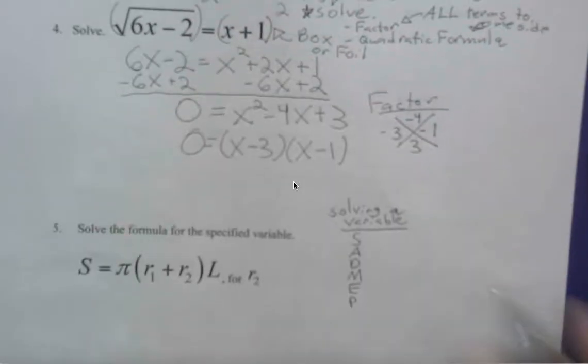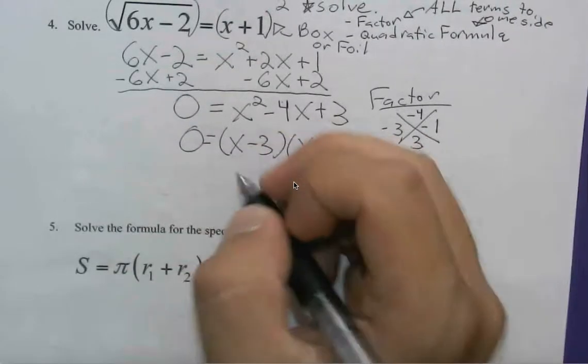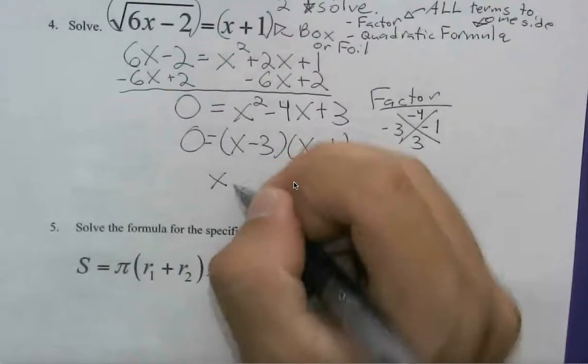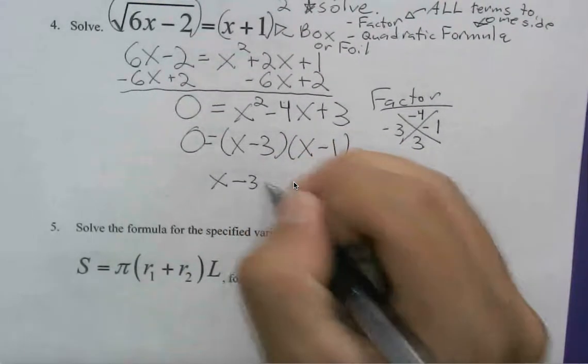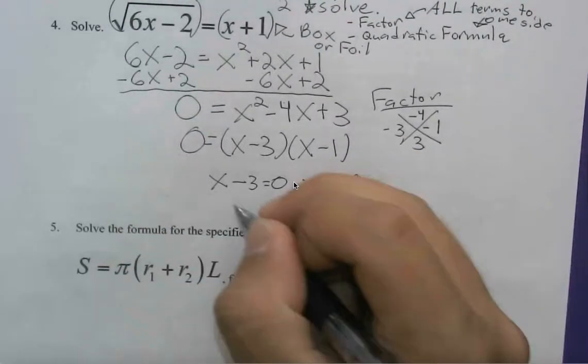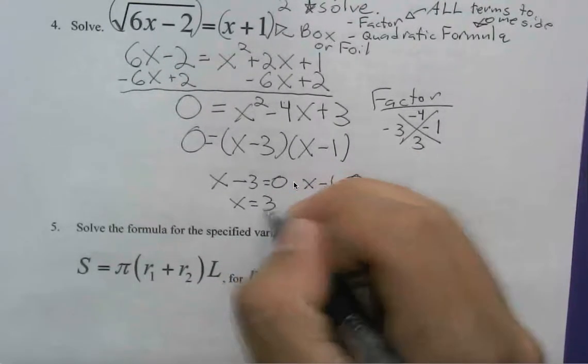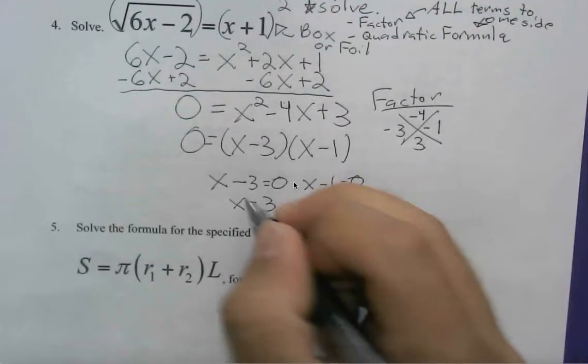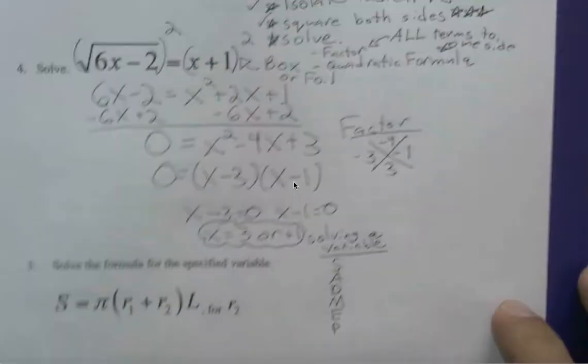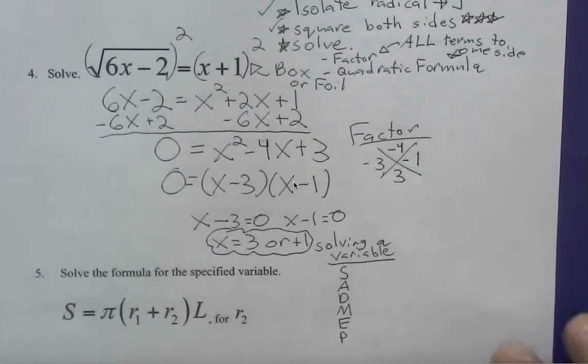Using the zero product property, which if you need a refresher, check the previous video. We end up with x minus 3 equals 0, x minus 1 equals 0. Solving this, we can say that x equals 3 or positive 1. And we can always plug back in and check.